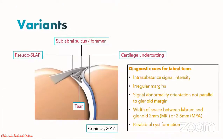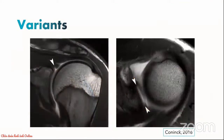Do be aware that there are morphological findings in the glenoid labrum that look like tears but actually represent normal variants. This includes sublabral sulcus, sublabral foramen, pseudo-SLAP, and cartilage undercutting. If you follow the diagnostic cues for diagnosis of labral tears described earlier, you should be able to differentiate variants and tears with confidence. For example, in these coronal and axial MRI arthrogram images of the same patient, we see a thin, smooth fluid cleft in the superior labrum that parallels the glenoid margin in orientation and does not violate the labral substance. This is interpreted as a sublabral sulcus rather than a superior labral tear.